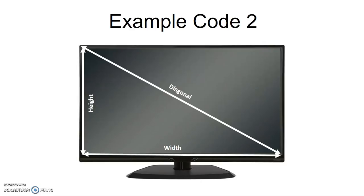So even though our TV is a rectangle, we can use Pythagorean theorem to determine the width of that TV depending on the diagonal and height measurements.